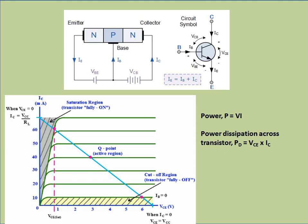In the saturation region the transistor is fully on, so the voltage across the transistor is very low. Similarly, in the cutoff region the transistor is off, so the collector current is very low and the voltage drop across the transistor is very high. In both these regions the power dissipation is very less. In a linear power supply, however, the transistor operates in the active region, where there is a linear relationship between collector current and the voltage drop V_CE.